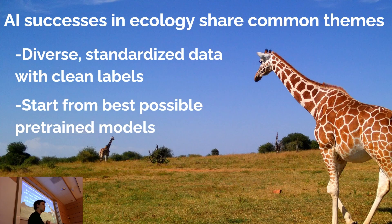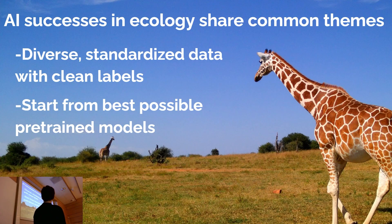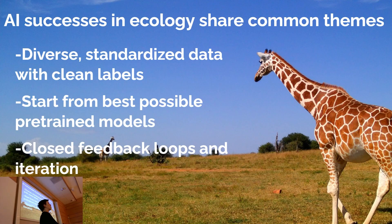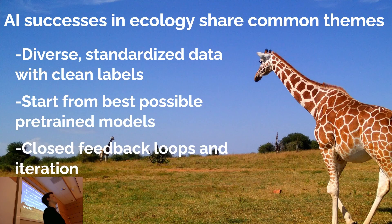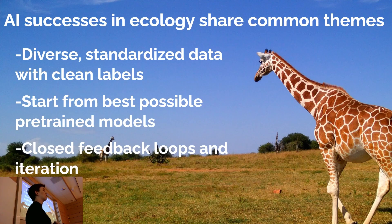The next thing is starting from the best possible pre-trained models — not starting from scratch, because we're almost always operating in the space of small datasets. So starting from good pre-trained weights and making use of what's already out there. The third important thing is closed feedback loops and iteration. A lot of systems that have gotten very useful have built a model, deployed it to users, had users find places where the model doesn't work, provided that labeled data back to AI experts, retrained the model — and this iteration happens continuously. We're now on version five of MegaDetector, and every single iteration has increasingly solved these problems. The idea that you can build a perfect model from day one, when the world is constantly changing underneath you, is a naive one.